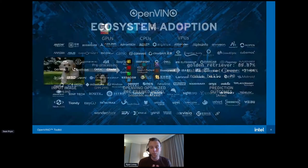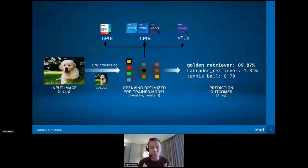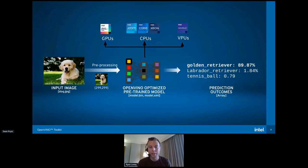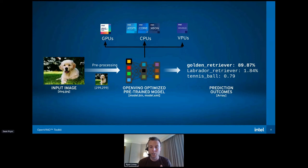Taking an input image, doing some pre-processing, and sending it to an OpenVINO-optimized graph that can run on any of the hardware backends, and then we get a prediction. This is a simple image classification example, and there are a number of other use cases. Image recognition is really just the tip of the iceberg, but it's the most common and where a lot of this journey started.